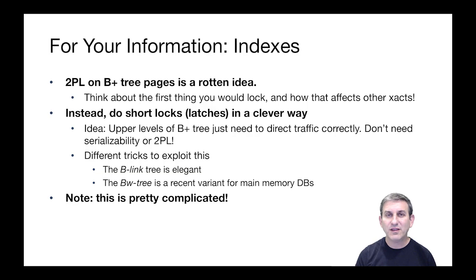So there have been a couple of different tricks in the literature to exploit this. One that's pretty elegant to read is the B-link tree, and that's used in some systems. Most recently, Microsoft has a scheme called the BW tree, which is a variant of the B-link tree that they use in their main memory database. Those are two different schemes for B-trees with lightweight latching that you might want to look at. The BW tree is actually quite complicated and not for the faint of heart, but if you want to learn some interesting concurrency control for indexes and databases, I encourage you to learn about these things.